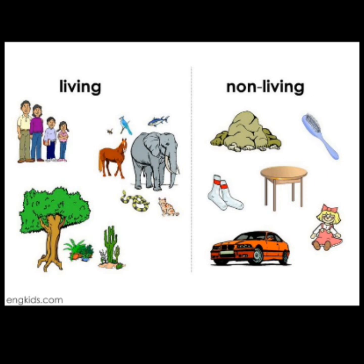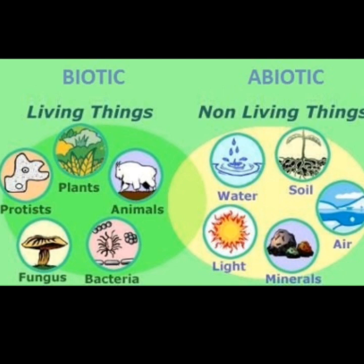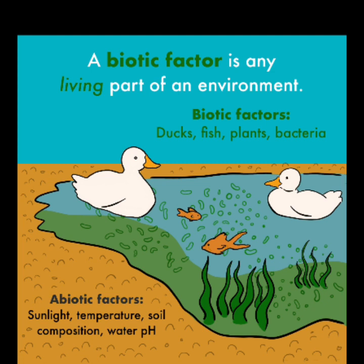Natural environment includes living organisms and non-living elements. Natural environment includes biotic and abiotic components. Biotic components refers to the world of living organisms — for example, plants and animals. Abiotic components refers to the world of non-living elements such as land, air, water, etc.